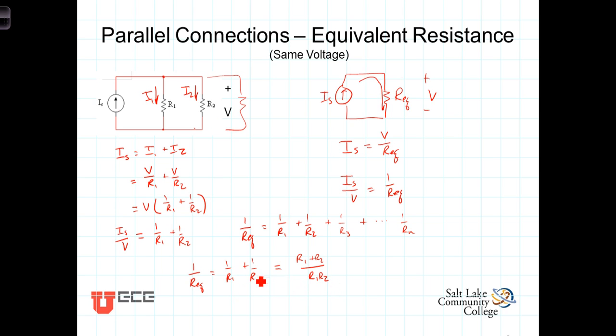On this side we'll have R1 plus R2 over R1 times R2, just getting the common denominator of R1 R2 and putting them both over that common denominator. Now inverting, we have then R equivalent of two parallel connected resistors is equal to R1 R2 over R1 plus R2.